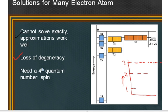And our subshells shift. So now the 2s is of lower energy than the 2p. Whereas in the single electron situation, the 2s and the 2p were of the same energy.